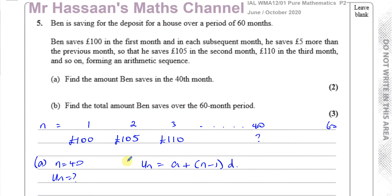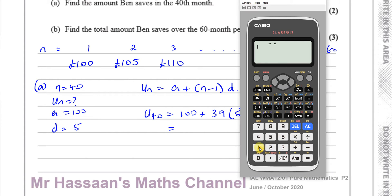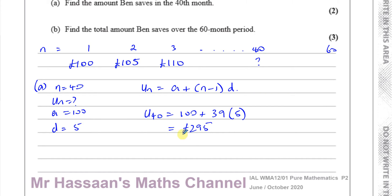We know that the first term A is equal to 100, and the common difference D is equal to 5, because you're adding 5 each time. So the 40th term equals A, which is 100, plus N minus 1, which is 40 minus 1, which is 39, times the common difference, which is 5. So 100 plus 39 times 5 gives us 295 pounds. So 295 pounds is the 40th term — that's how much he saves in the 40th month.